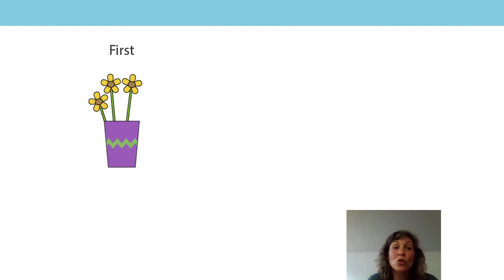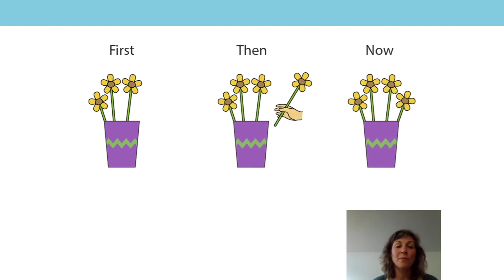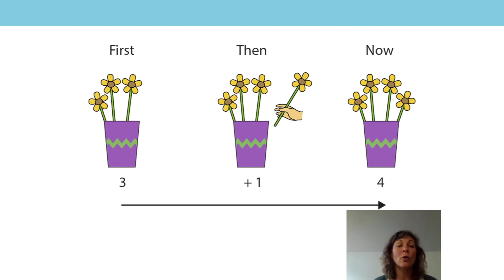Can you help me to tell a story with the pictures? You might remember this from a previous lesson. Shall we have a go at telling it together? First, I had three flowers in my vase. Then, I added one more flower. How many have I got now? What's the equation that goes with this? Did you say 3 plus 1? 1 more than 3 is 4. So 3 plus 1 is equal to 4.